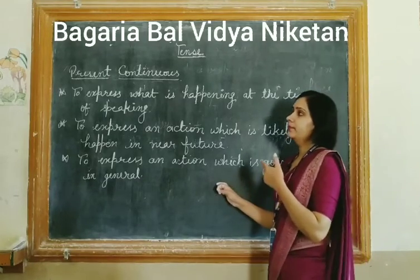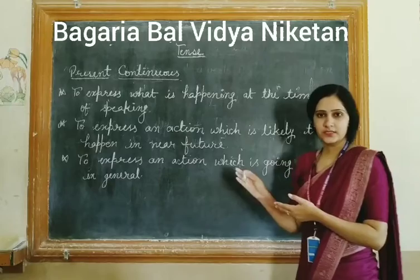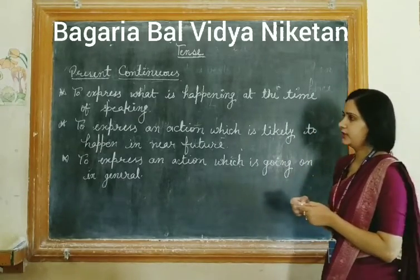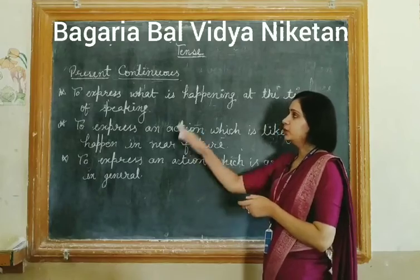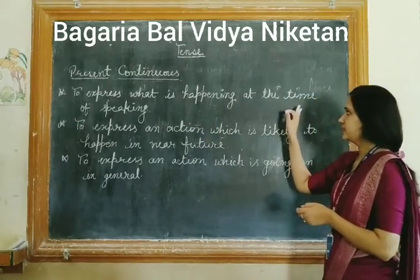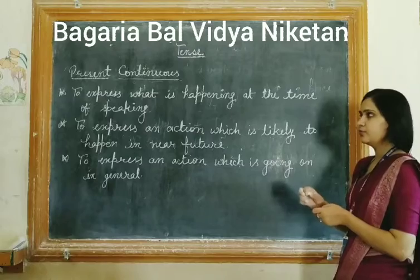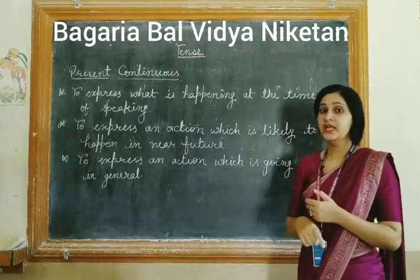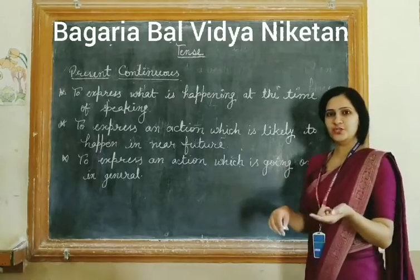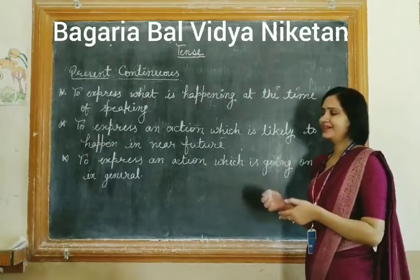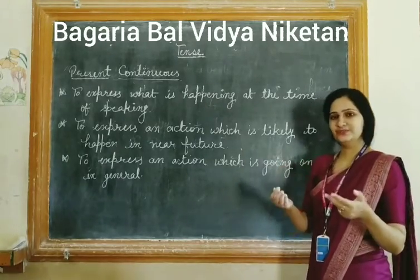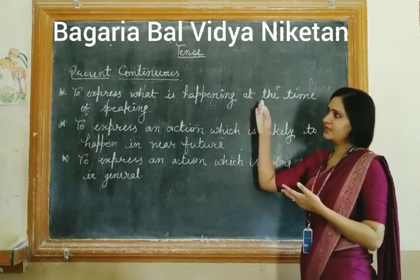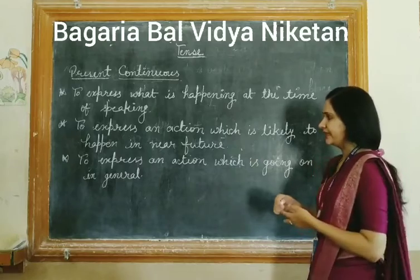To express such a situation, we follow the present continuous structure. The first situation is to express what is happening at the time of speaking — yaani mai abhi bol rahi hoon aur woh kaam ho bhi raha hai, in present time. For example: 'I am teaching you English.' So we write this according to the present continuous tense formula.